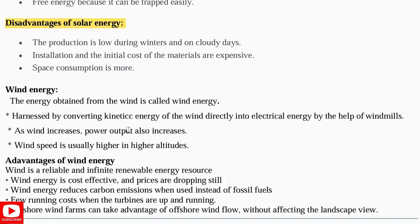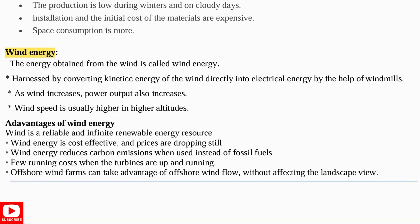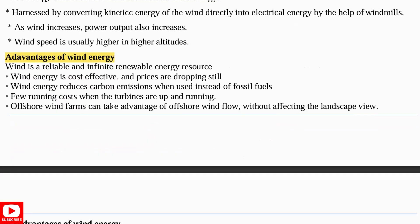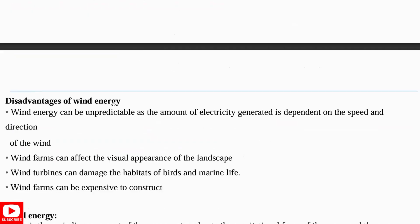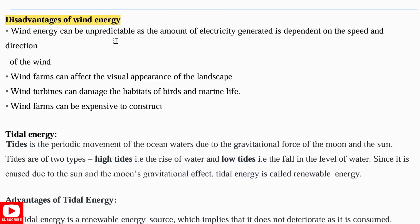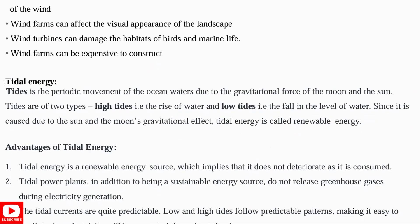Next comes wind energy, which is also a renewable energy source — write two to three lines about that. Then note the advantages of wind energy: it is cost effective, reduces carbon emission, low running cost, and so on. Then write the disadvantages of wind energy as well.